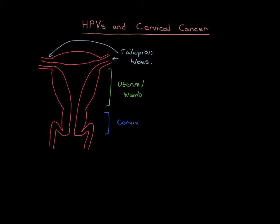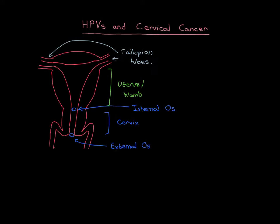There is an entrance to the cervix from the vagina and an exit from the cervix into the uterus. These are called the external os and the internal os. The one leading from the vagina into the canal through the cervix — the endocervical canal — is called the external os. The junction between the endocervical canal and the uterus is the internal os. The canal through the middle of the cervix, bounded externally by the external os and internally by the internal os, is called the endocervical canal.